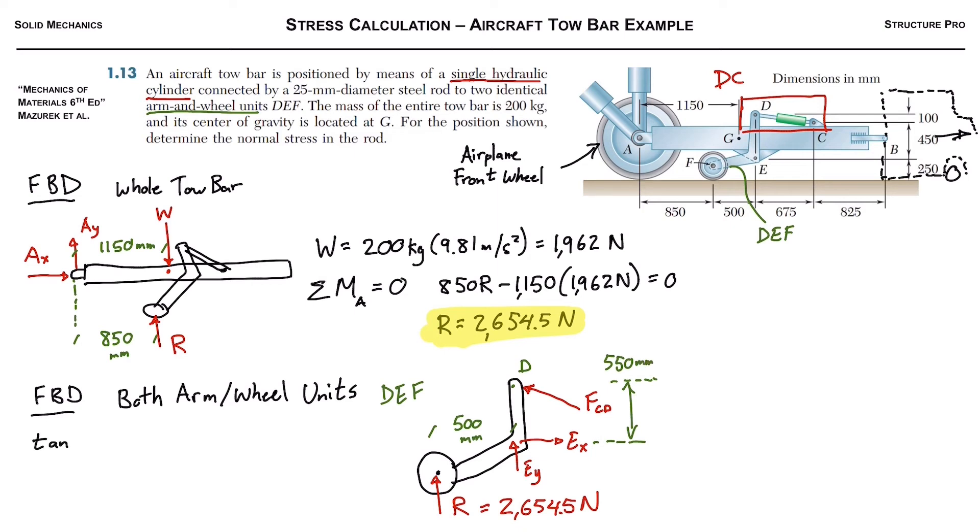So next we're gonna have to do some trigonometry here to figure out the angle of this element CD. So we'll take the tan of the angle, and we have to first label this angle, so which one we're trying to figure out. So we're gonna define alpha is the angle between horizontal and FCD, so it's that small angle there.